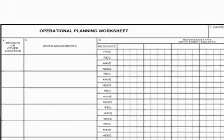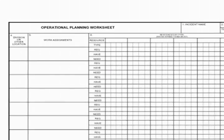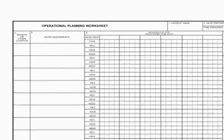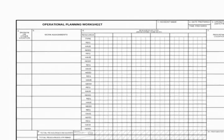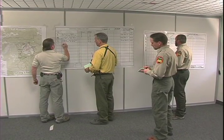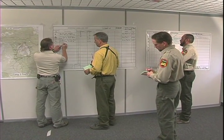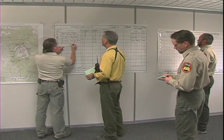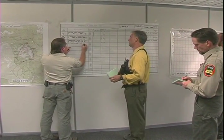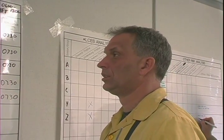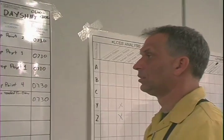The purpose of the ICS Form 215, Operations Planning Worksheet, is to communicate the decisions made during the planning meeting concerning resource assignments to the resource unit. The worksheet is used by the resource unit to complete assignment lists and by the logistics section for ordering resources for the incident. The information entered on the form by the operations section chief is later used on the ICS 204 form. We will now give you instruction on completing an ICS 215 Operational Planning Worksheet.